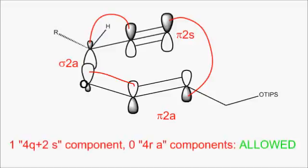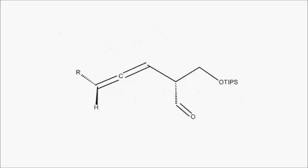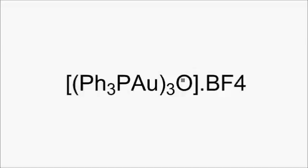This is still an odd number of 4q plus 2s components, so again Woodward and Hoffman's rules say that it's fine. And if we draw what the product is, this is the alternative diastereomer. In reality, the researchers were able to bias it towards the diastereomer they wanted by using this very strange looking triphenylphosphine gold oxygen tetrafluoroborate.